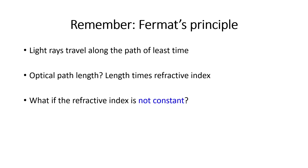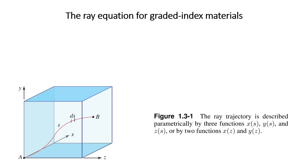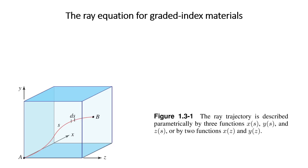What if the refractive index is not constant? Specifically, we study the case for which n varies with position. We call this kind of media graded index media, or GRIN. The starting point for such an inhomogeneous medium is the general equation of Fermat's Principle.